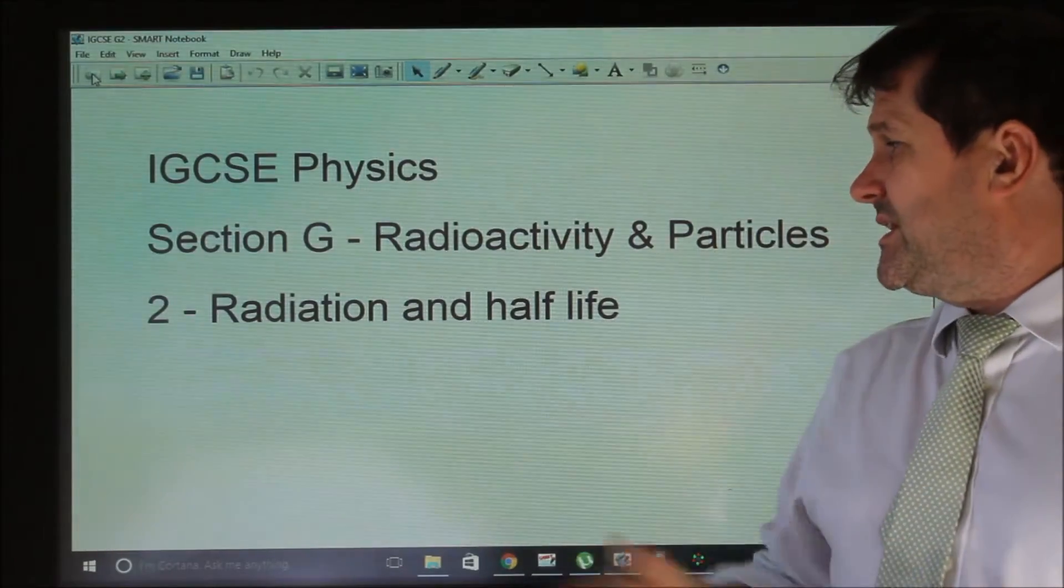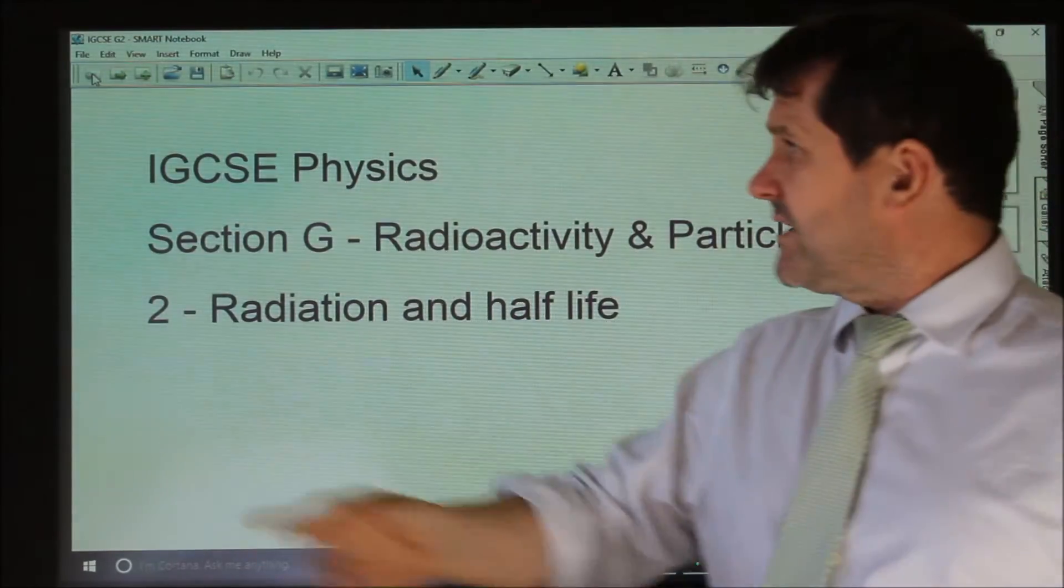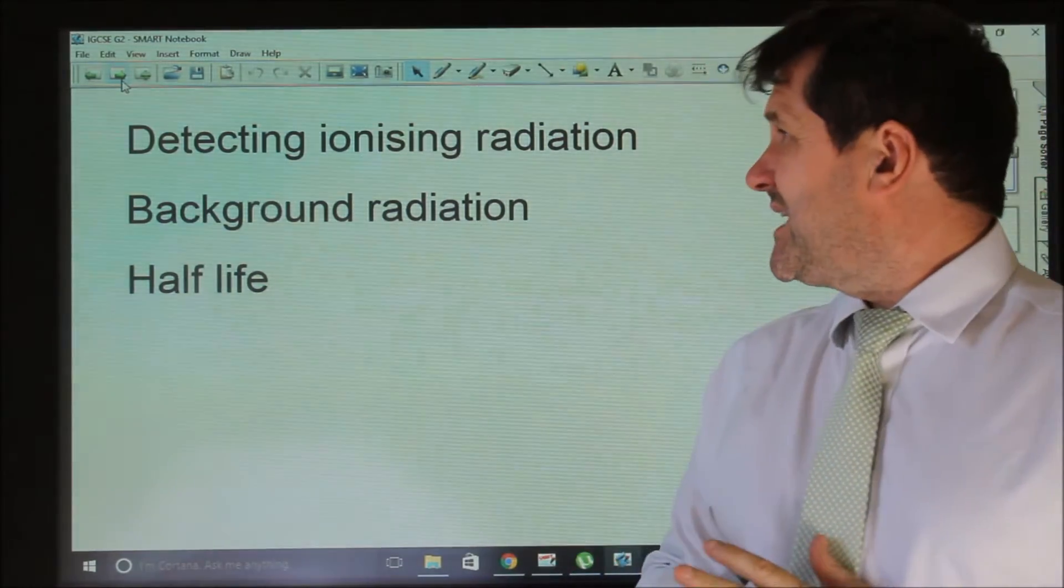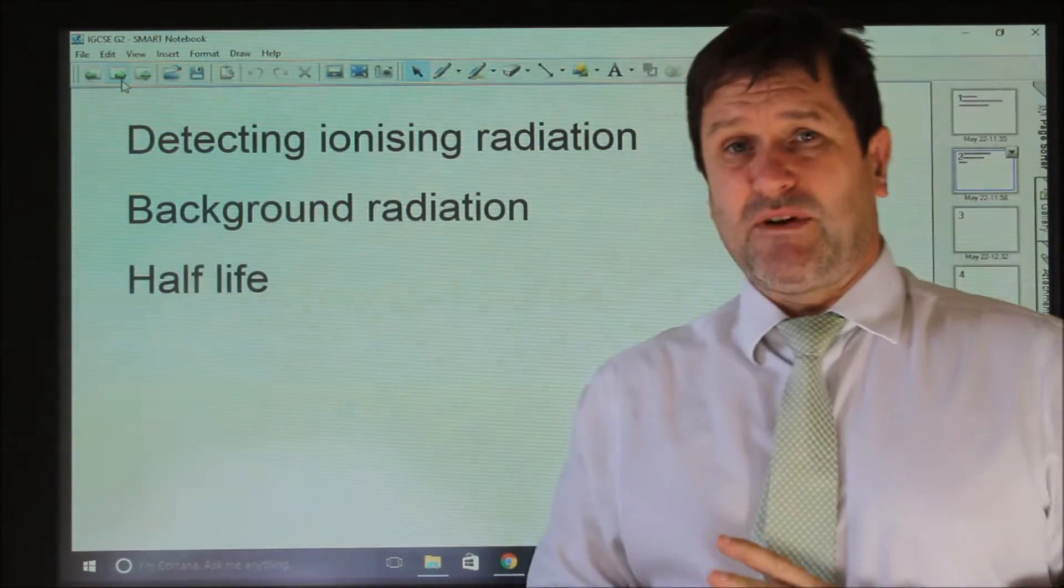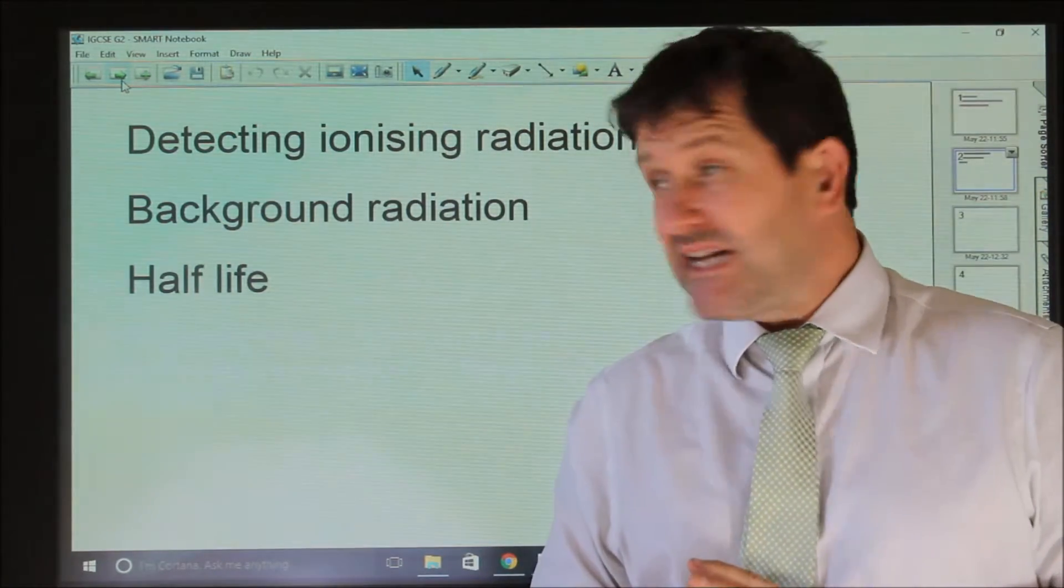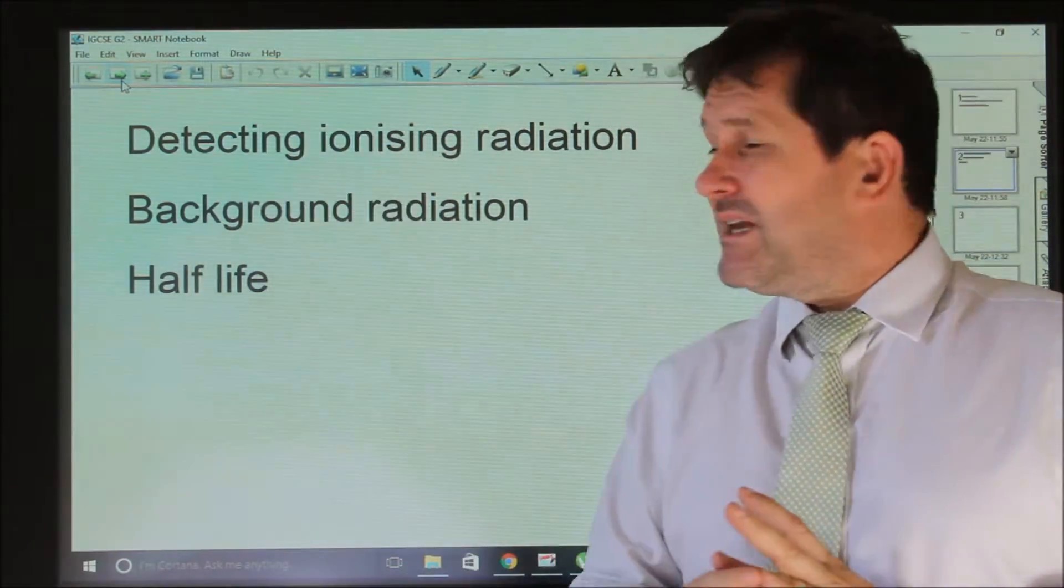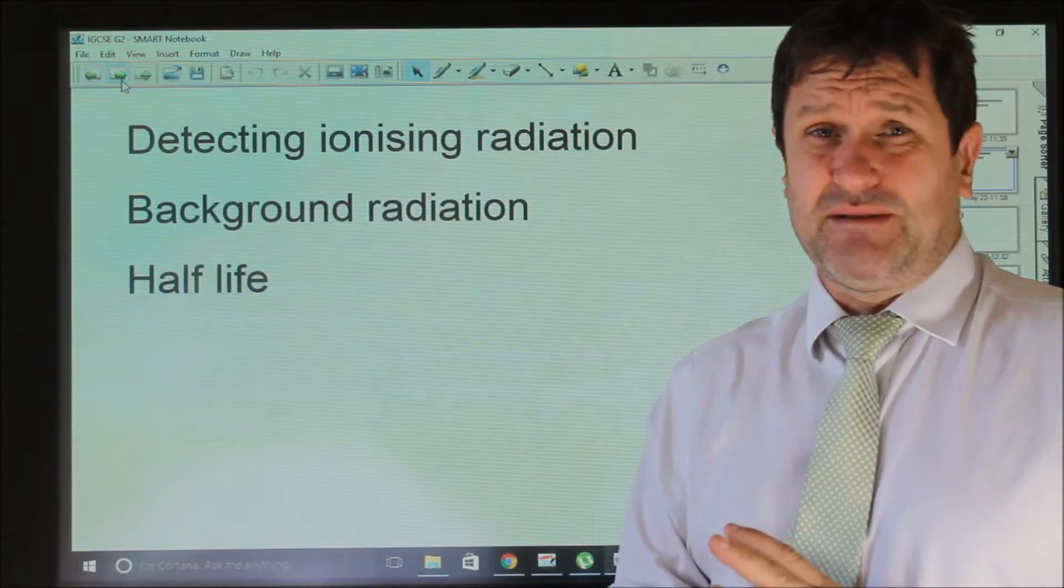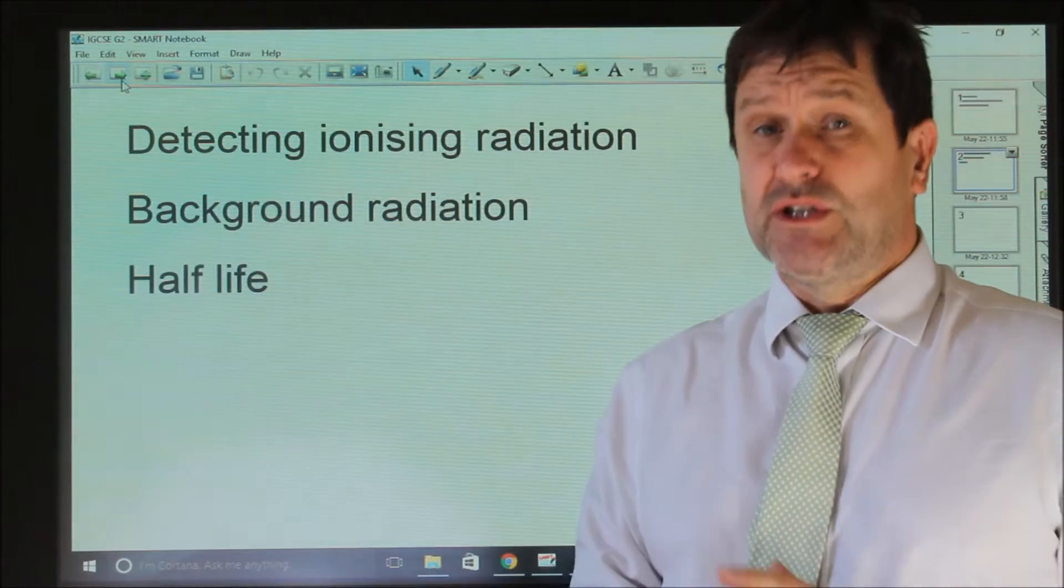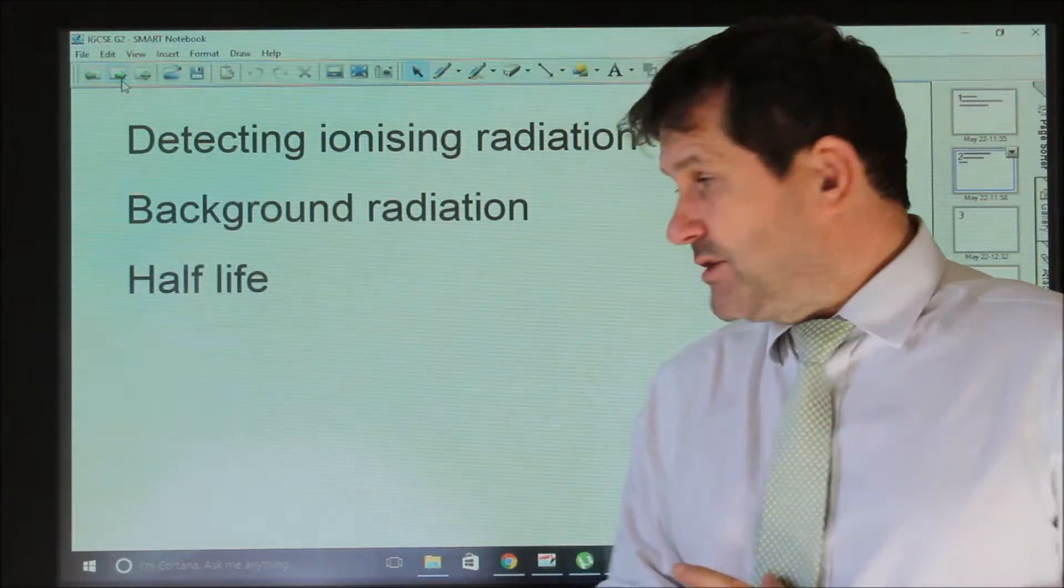In this lesson on radioactivity and particles, we're looking at radiation and half-life. I'll very quickly mention how we detect ionizing radiation, briefly talk about background radiation, before explaining half-life in detail. When ionizing radiation—alpha, beta, and gamma—is emitted, we can detect it using, for example, a Geiger-Muller tube.